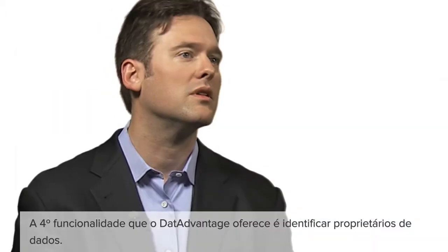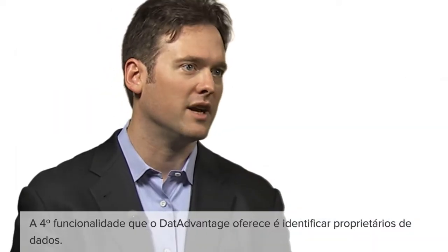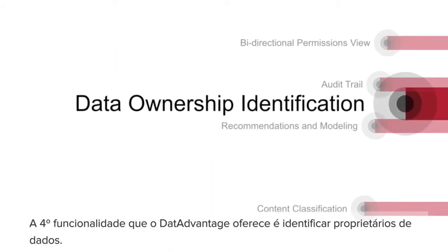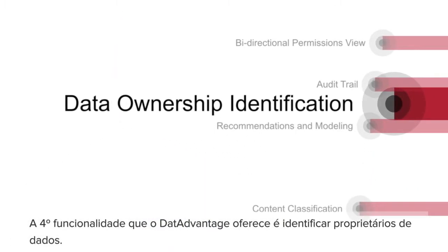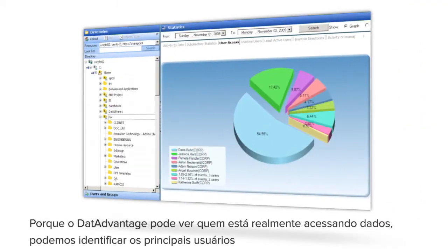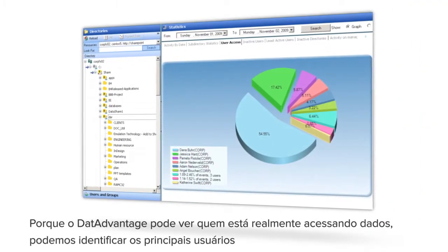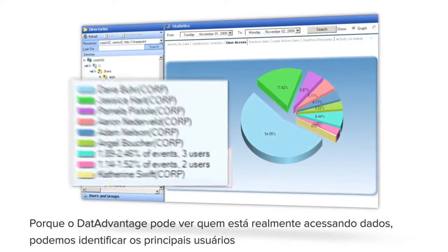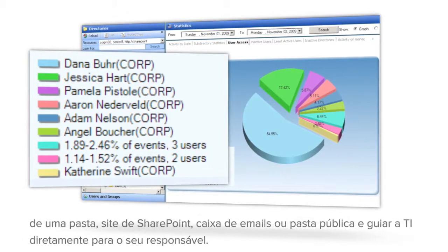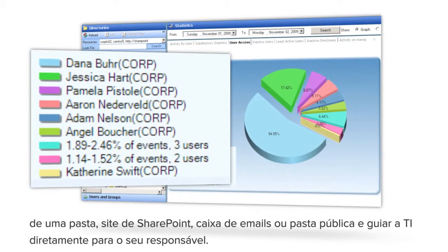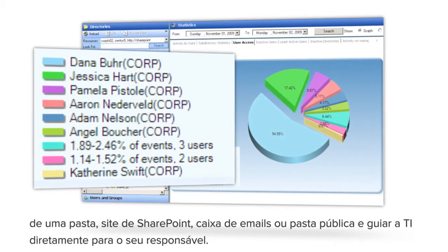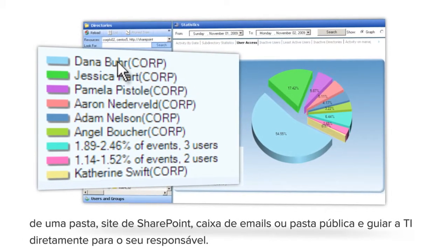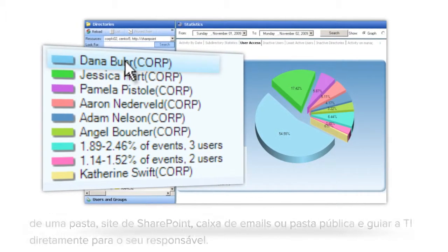The fourth functionality that Data Advantage offers is to identify data owners. Because Data Advantage can see who is actually accessing data, it can identify the top users of a folder, SharePoint site, mailbox, or public folder, and lead IT right to the appropriate business owner.